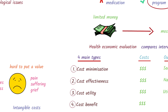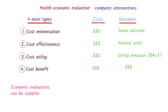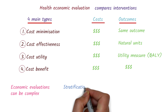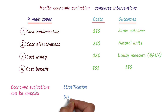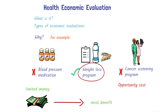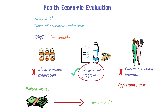In reality, economic evaluations can be quite complex to do and require various statistical calculations and adjustments, such as stratification — to adjust for different patient groups that might benefit differently from the interventions — discounting — to account for costs and benefits that occur at different times — and sensitivity analysis — to adjust for uncertainties in the data. And that's a very quick introduction to health economic evaluation, an important tool that helps us make decisions about allocating health resources.